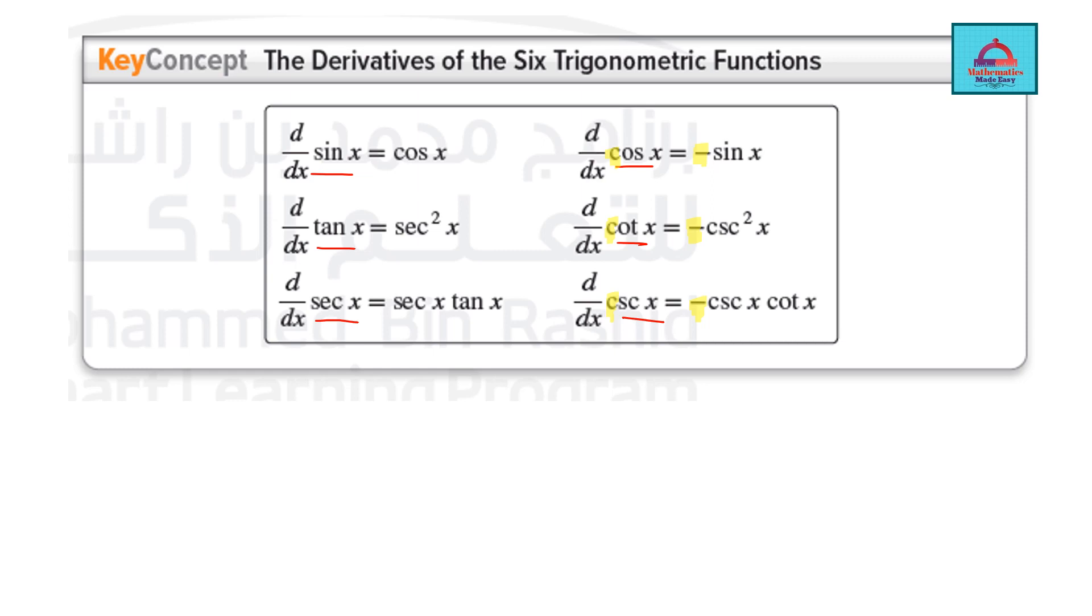There is another pattern you can notice. When it is sine its derivative is cos, and when it is cos the derivative is sine with a negative sign. If it is tan it is secant square, and if it is its reciprocal cot it is negative cosecant square. There is a pattern that will help you remember the formula.